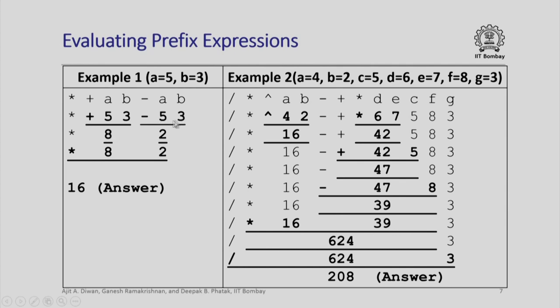Minus 5 3 will be executed. So, 5 minus 3 will be 2 and now I will have this reduced expression star 8 2, 8 and 2 will be multiplied getting an answer. You can satisfy yourself that in exactly the same fashion, these shall be the steps in which this more complex expression will be evaluated.